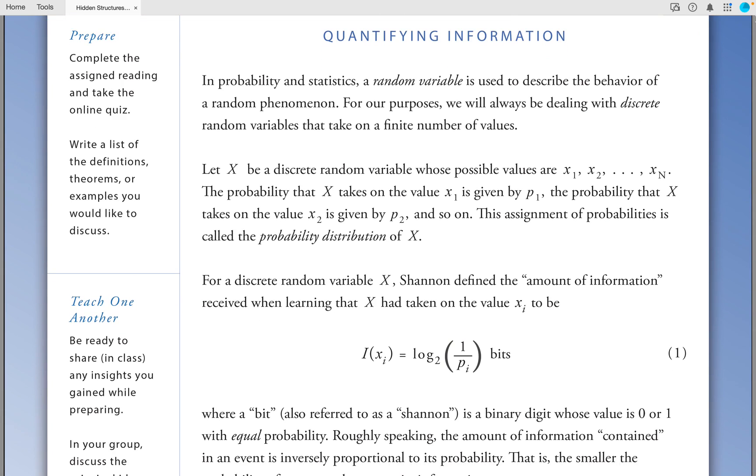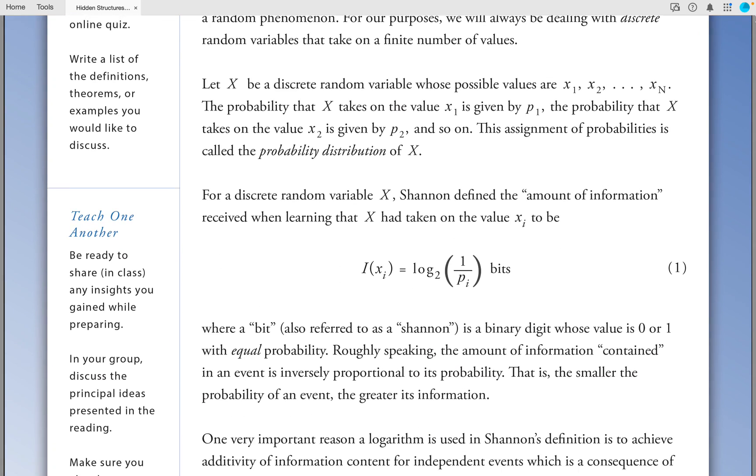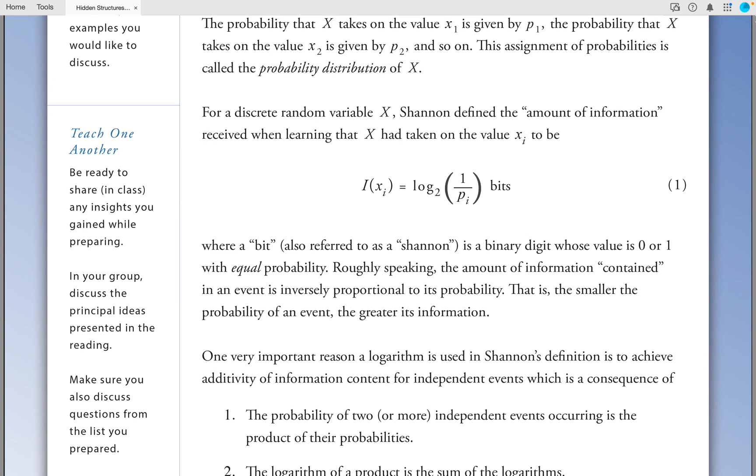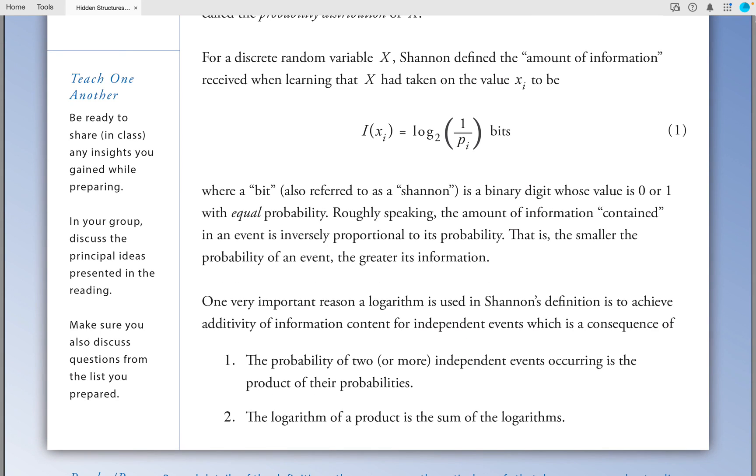For a discrete random variable X, Shannon defined the amount of information received when learning that X has taken on the value X sub i to be the following: log base 2 of 1 over P sub i bits, where a bit, also referred to as a Shannon, is a binary digit whose value is 0 or 1 with equal probability. Roughly speaking, the amount of information contained in an event is inversely proportional to its probability.